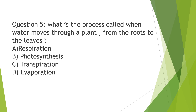Question number 5: What is the process called when water moves through a plant from the roots to the leaves? Option A. Respiration, Option B. Photosynthesis, Option C. Transpiration, Option D. Evaporation. And the right answer is Transpiration, Option C.